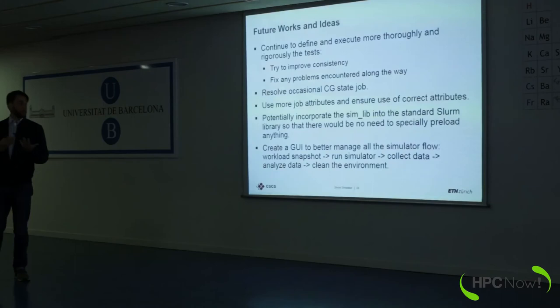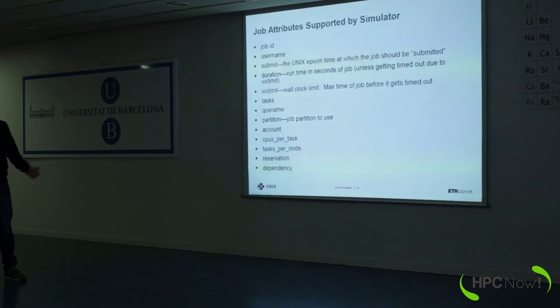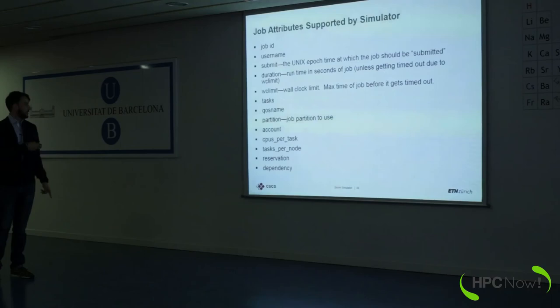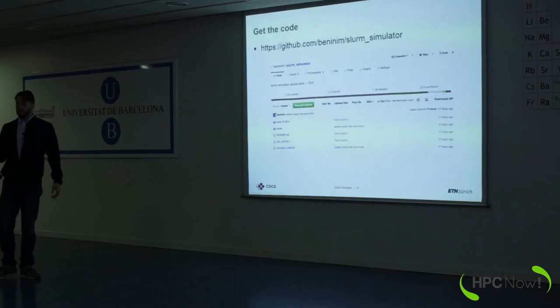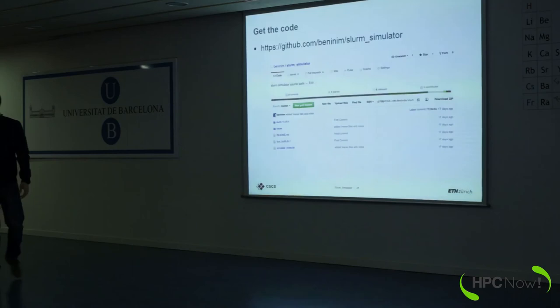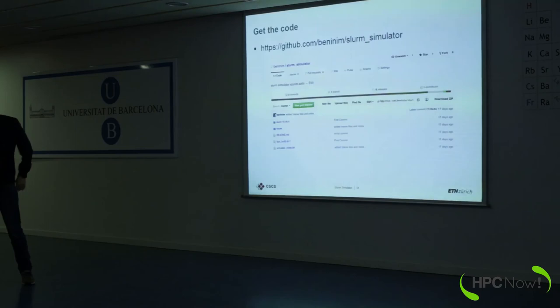We want to integrate the sim library into the standard Slurm library. We were thinking about creating a graphical user interface to better manage all the flows — collect data from the past, run the simulator, and most importantly compare old data with new data more easily. These are the job attributes currently supported: number of tasks, quality of service, partition, accounts, CPU per task, task per node, and dependency. This is not official — we sent the code to SchedMD; it's under revision. There is some community interest — for instance, at a university in Madrid they are using it and contributing code.